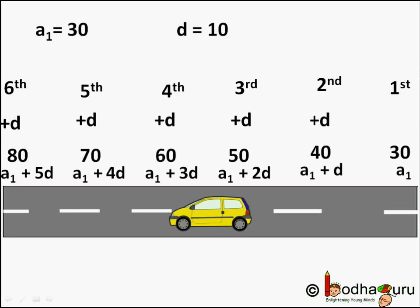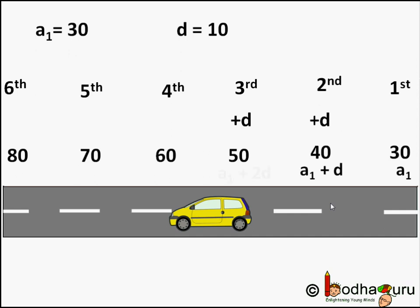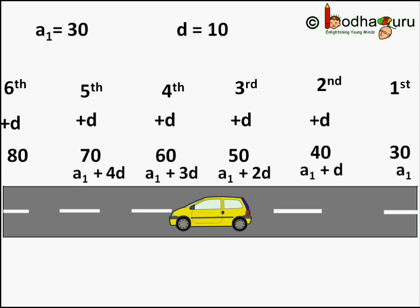Let us write it in a generic way. The first term of an arithmetic progression is represented as a1 and the common difference is represented as d. The second term would be a1 plus d. The third term is a1 plus d plus d, which equals a1 plus 2d, or a1 plus (3 minus 1)d. The fourth term is a1 plus 2d plus d, which equals a1 plus 3d, or a1 plus (4 minus 1)d. Continuing this way, the nth term is a1 plus (n minus 1)d.